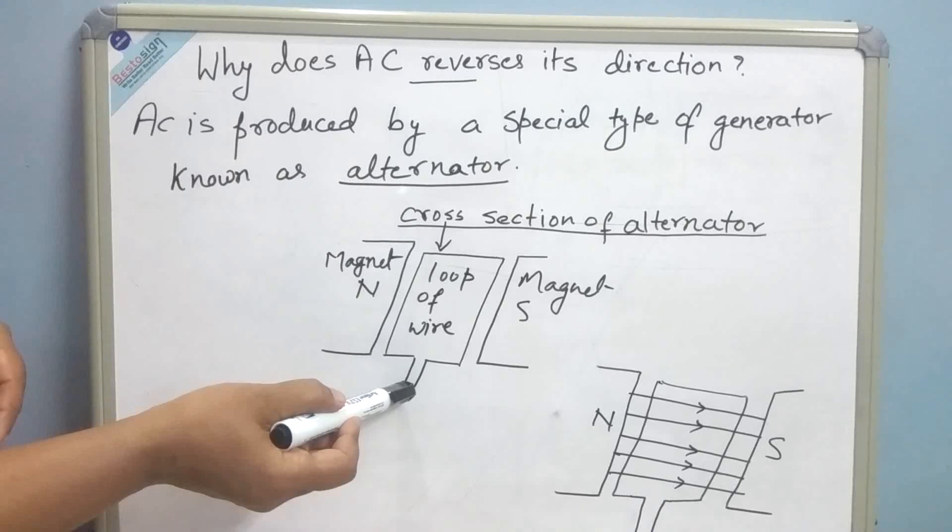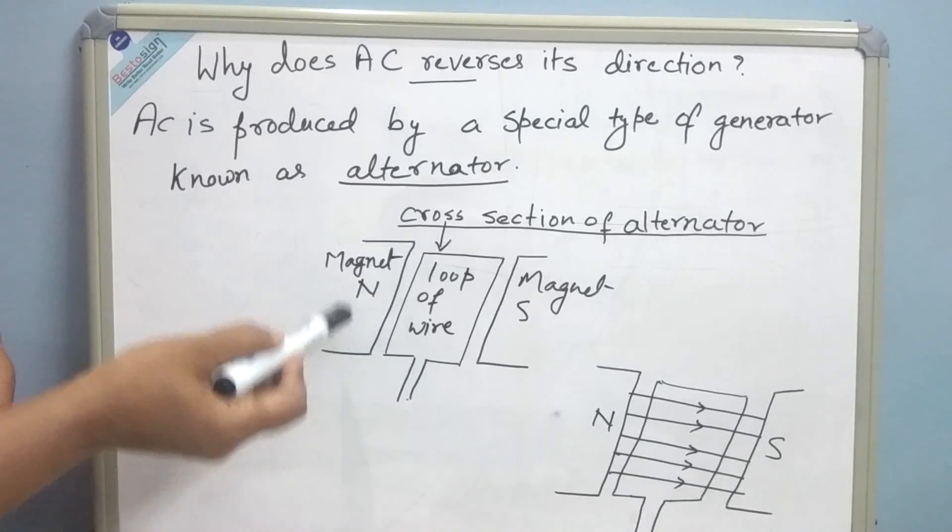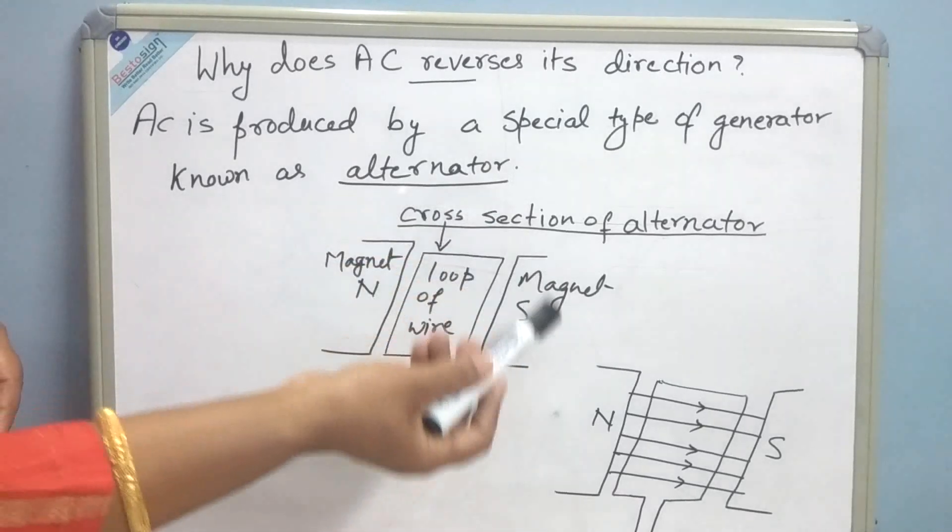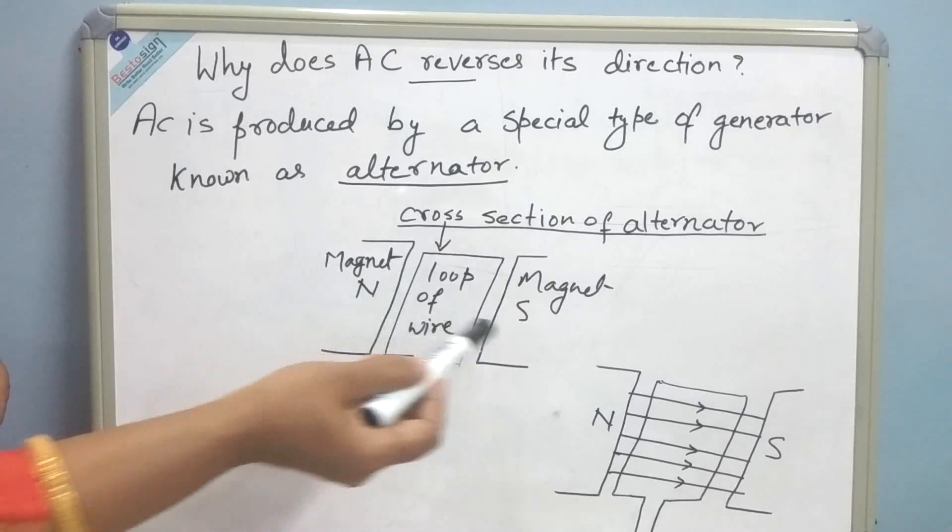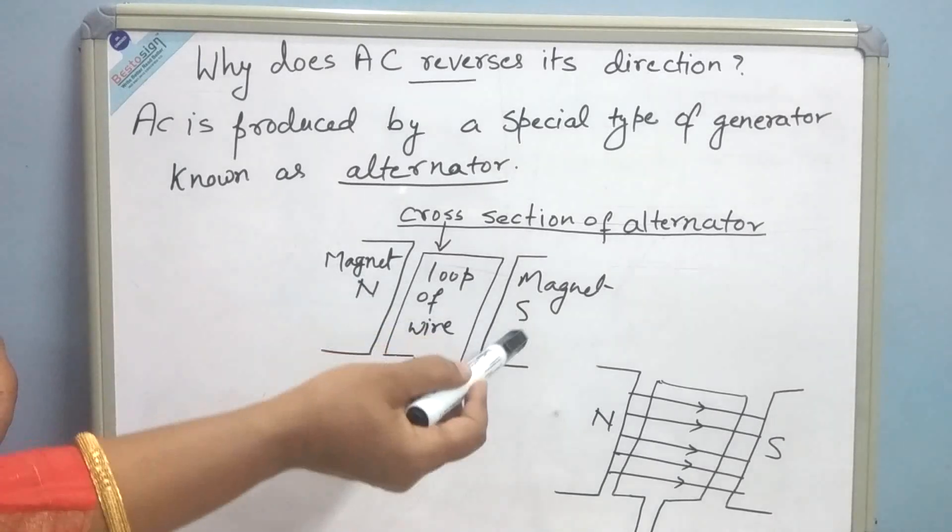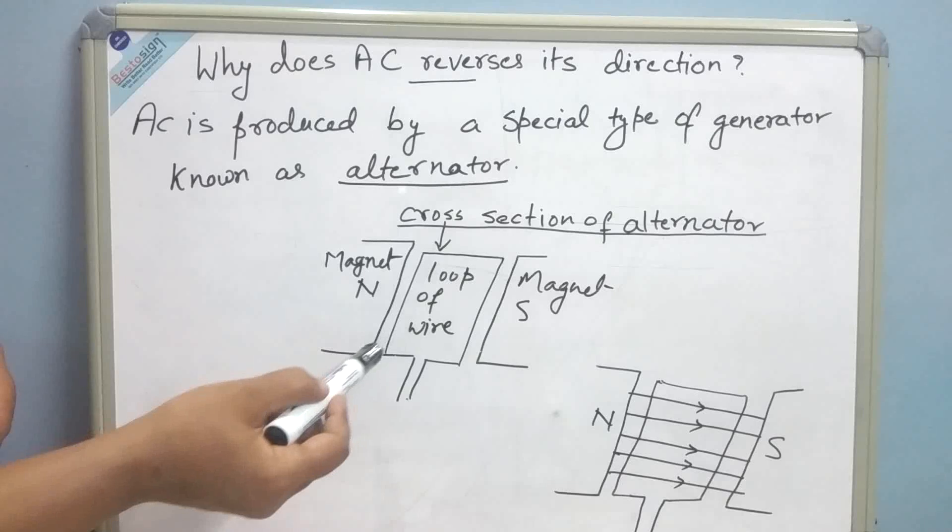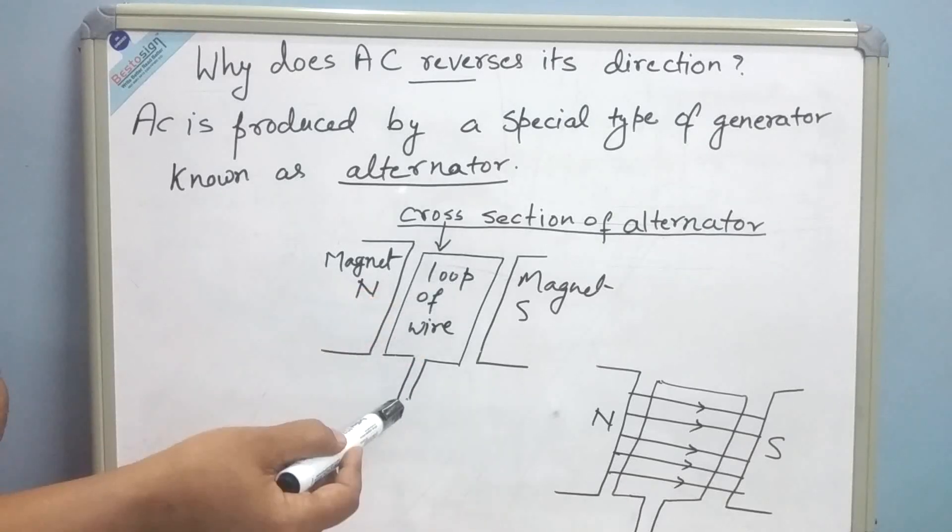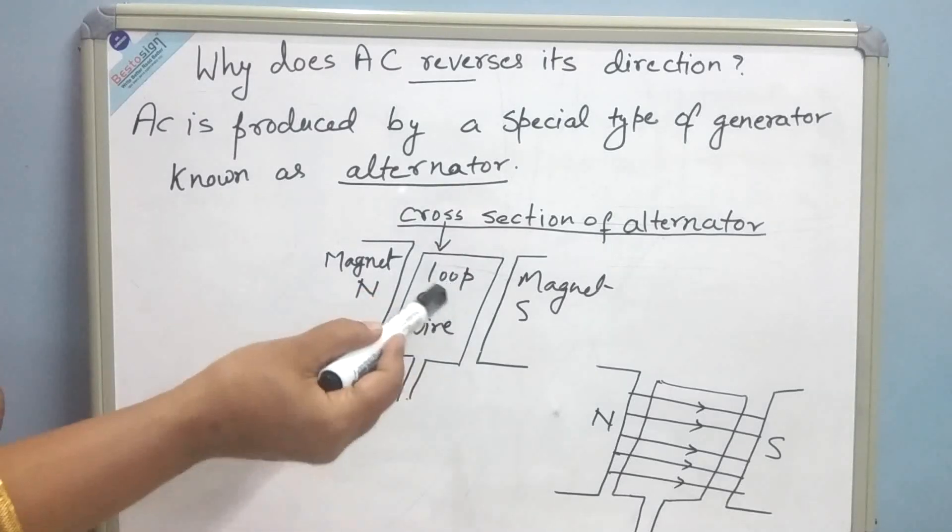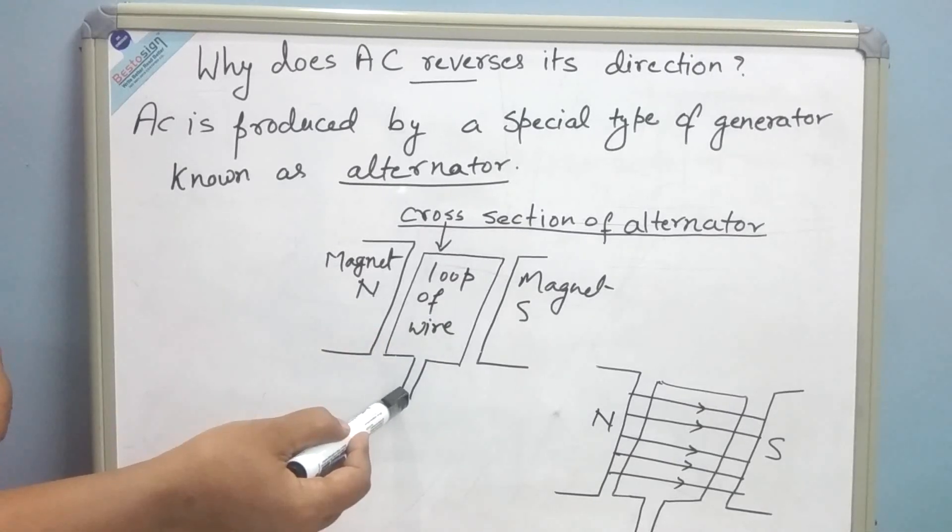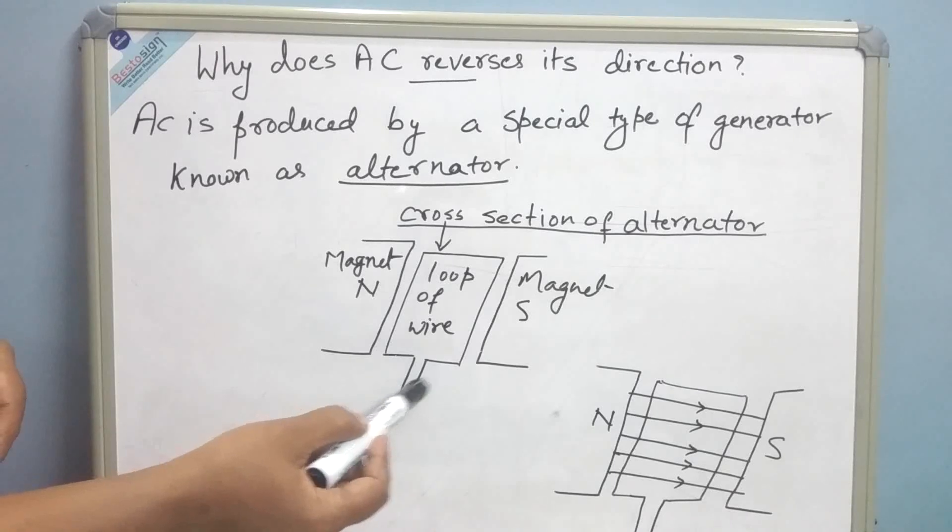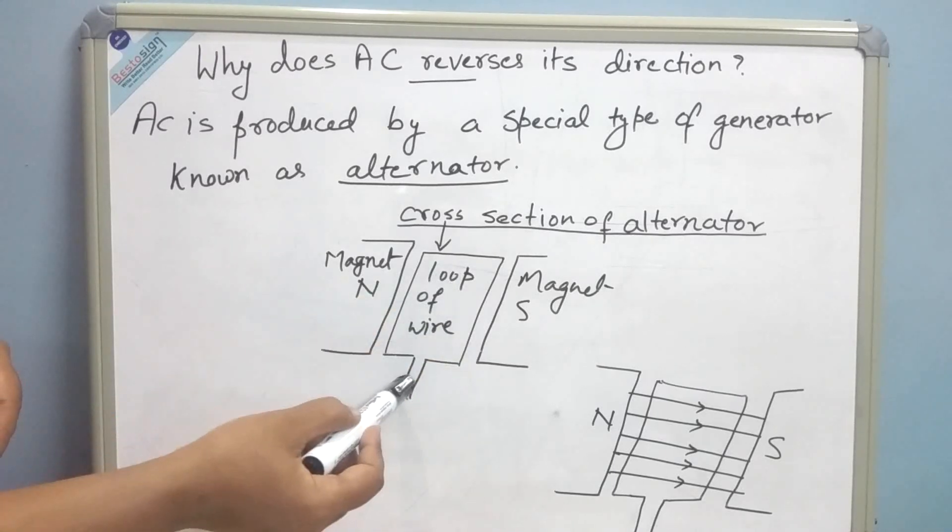This loop of wire carries small DC current, so this will have an electric field inside it. Because of this magnet, there is a continuous magnetic field around the loop of wire. When the loop of wire moves, there will be a continuous intersection between electric field and magnetic field. Because of that, current will induce in loop of wire. The spin in loop of wire can take place because of any reason. It can happen because of water turbine, steam turbine, or wind turbine.